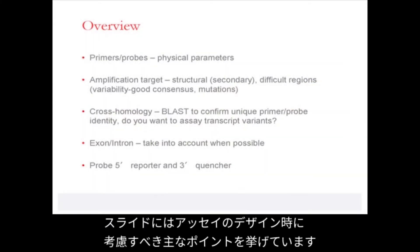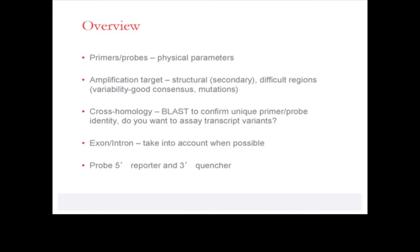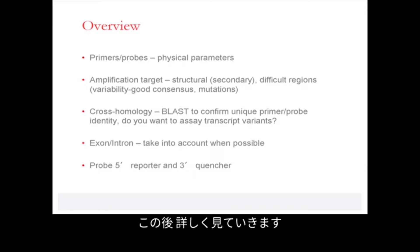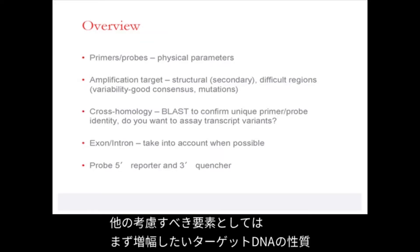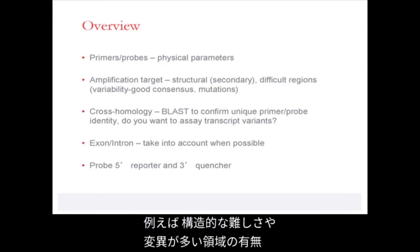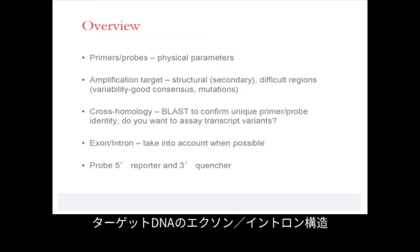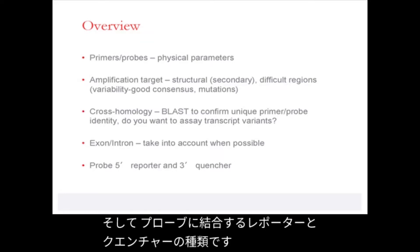In this slide we have listed the major factors to take into consideration as you approach your assay design. The physical parameters of the primers and probes are perhaps the key to successful assay design. Other factors include the nature of the target you intend to amplify, any structural difficulties or regions of high variability, cross-homology to unwanted targets, the exon-intron structure of the target, and what types of reporter and/or quencher molecules you need to place on the probes.